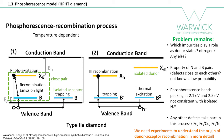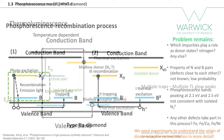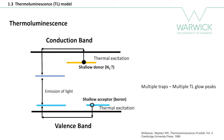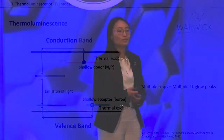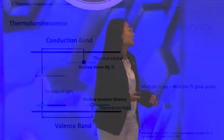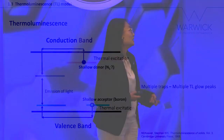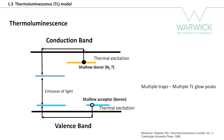Here is thermoluminescence. The mechanism is similar to phosphorescence. There are electron traps and hole traps which are able to excite electrons into the conduction band or release holes into the valence band by thermal excitation. The electrons or holes are able to activate some complexes or donor-acceptor pairs to generate emission of light — that is thermoluminescence. Each of the traps will produce one peak in the TL glow curve.